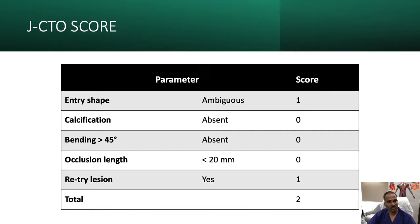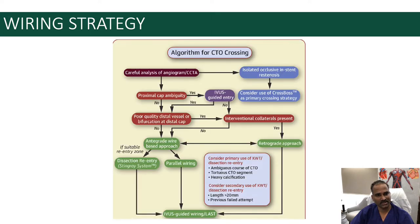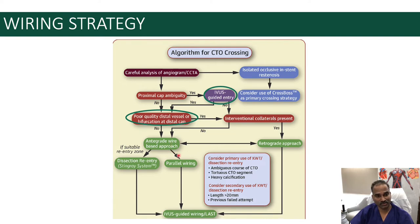The JCTO score is 2. The plan with the APCTO algorithm: as the patient has proximal cap ambiguity, we go ahead with IVUS-guided entry, leveraging the good side branch for IVUS. The good distal vessel makes antegrade wiring straightforward — we proceed with antegrade wire escalation. If the wire ends true-to-true, we close the case. If it goes sub-intimal, we can re-enter, do parallel wiring, or go retrograde — through septal collaterals first, or through epicardial collaterals after dilating the Ramus in-stent stenosis.